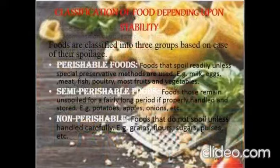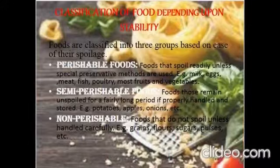Moving on to the classification of foods based upon their stability. Foods are classified into three groups based on the ease of their spoilage: perishable foods, semi-perishable foods, and non-perishable foods.